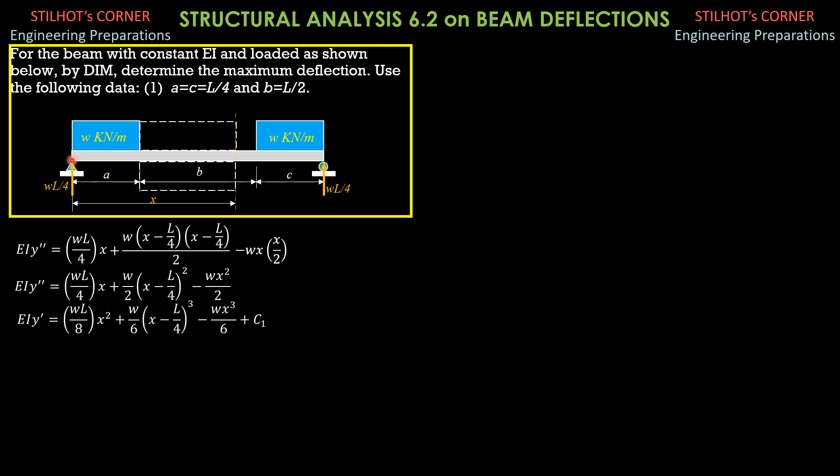There is slope at the origin, but there is no deflection at the origin. So C sub 2 is 0 if we are going to anticipate. So EI Y is equal to WL over 24 X cube plus W over 24 quantity X minus L over 4 to the 4th minus W over 24 X to the 4th plus C sub 1 X. Again, there is no C sub 2 because when X is 0, the deflection is 0. So there is no need to put C sub 2 and evaluate C sub 2. I already explained that in the lecture part on double integration method.